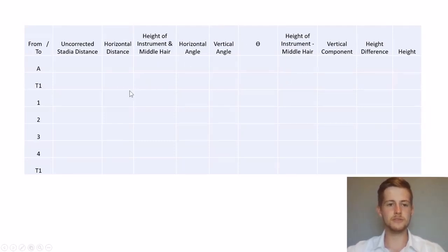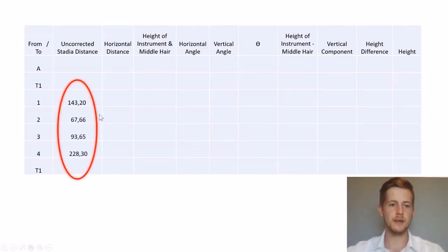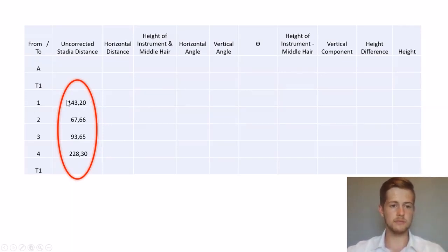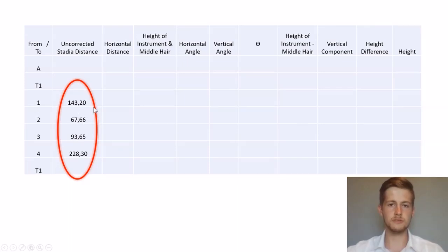The first thing you'll do is fill in your stadia distances that are uncorrected. You'll see that we have read four points from T1. Originally that was 14.320, multiplied by 100 to get 143.20. The same was done for all of them.